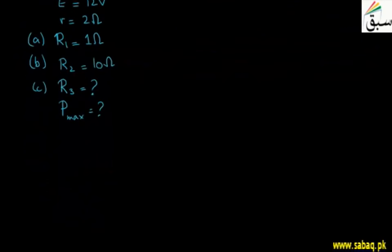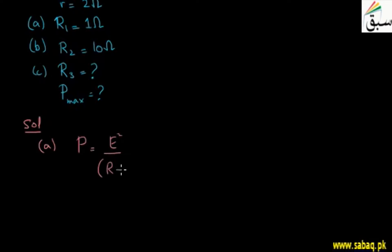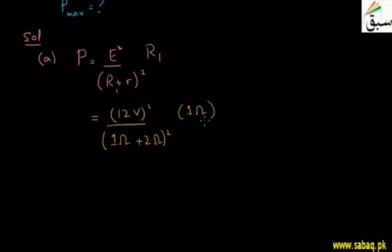Let's start our solution. For the first part we have to find the power, and for that the resistance is 1 ohm. The formula for power is P equals E squared divided by (R plus r) squared, into R. Here R is R1, which is 1 ohm plus 2 ohms, multiplied by 1 ohm.